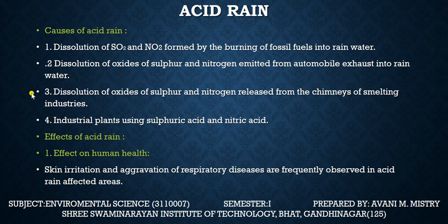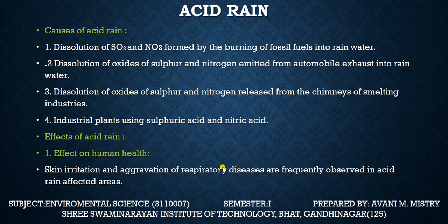Causes of acid rain include: dissolution of SO2 and NO2 formed by the burning of fossil fuels into rainwater; dissolution of oxides of sulfur and nitrogen from automobile exhaust into rainwater; dissolution of oxides of sulfur and nitrogen released from chimneys of smelting industries; and dissolution of hydrochloric acid.